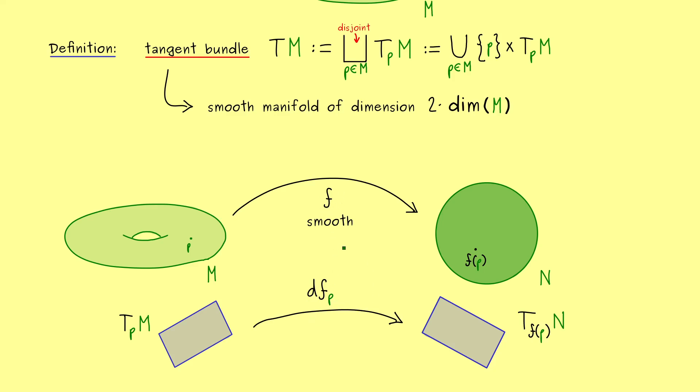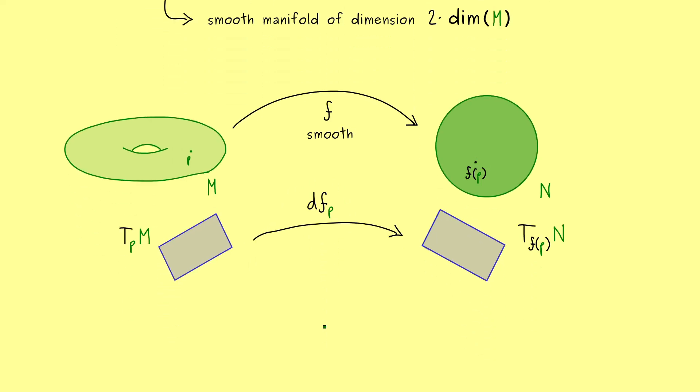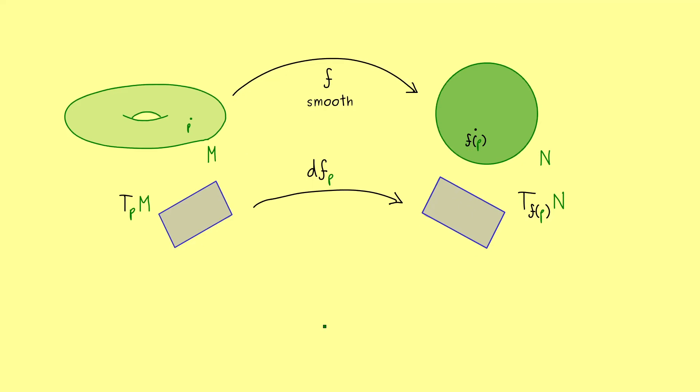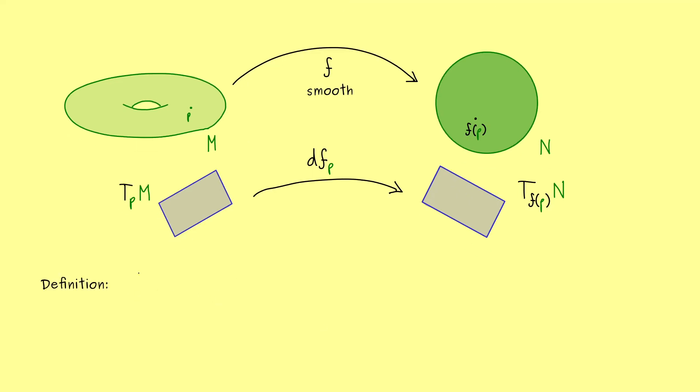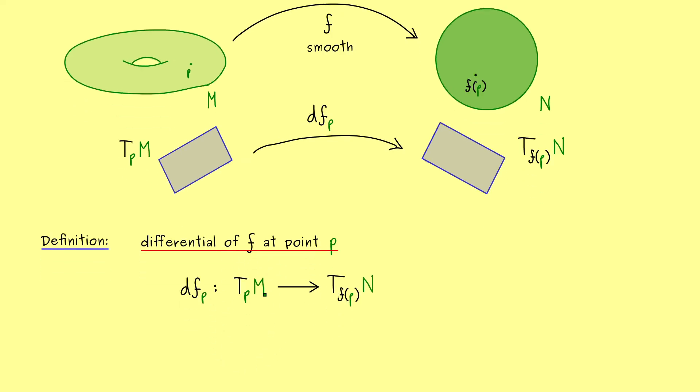Now it turns out that the precise definition of this differential is not complicated at all because we already did all the work for this definition. It pays off that we have discussed the tangent space in such detail. However, please don't forget at the moment this differential is fixed with the point p. Therefore it's included in the notation df_p. As we said before it maps one tangent space into the other. Hence we have to write down a definition for what is happening to a tangent vector here.